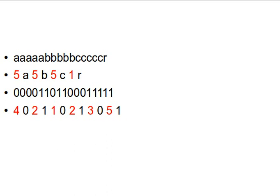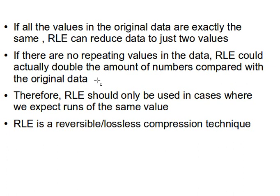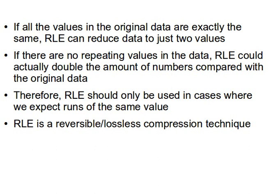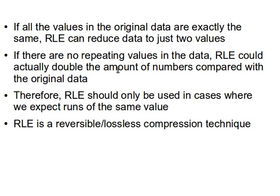A few things to notice about Run Length Encoding: if all the values in the original data are exactly the same, then RLE can reduce the data to just two values. Imagine we have 16 A's — we can represent that as just '16 A', only two values rather than 16. This is the optimal case — the best case scenario — where all the data has the same value. We end up with two values, and that's very good for compression.